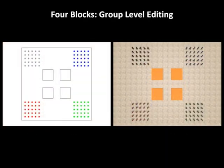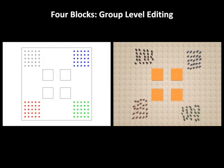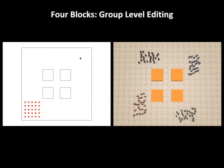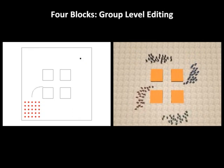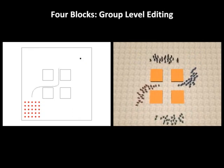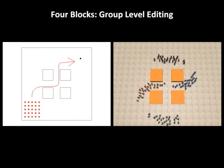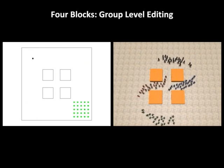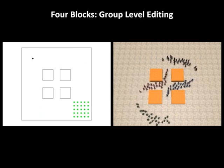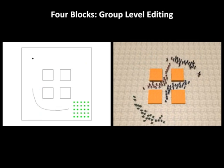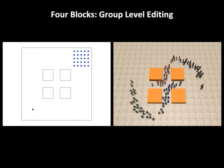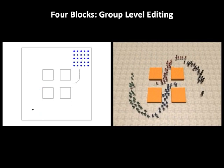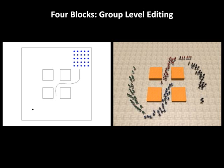This simulation indicates how our approach allows the user to edit the simulation at the group level. Here, the user specifies trajectories independently for each group of agents. These trajectories combine with the global planner to create unique crowd flows through the environment.